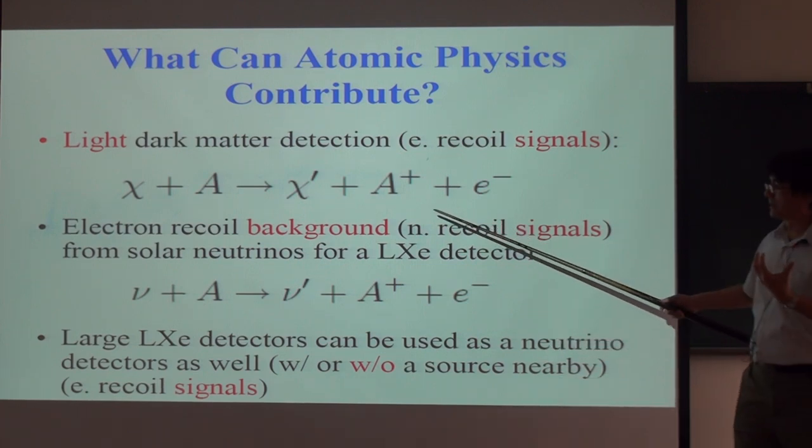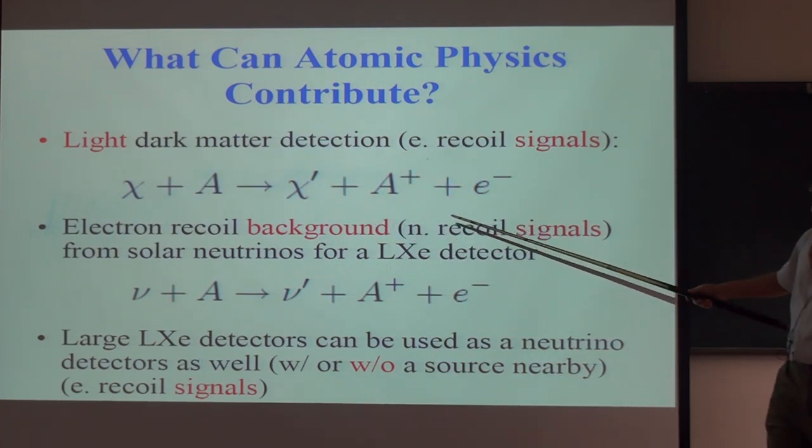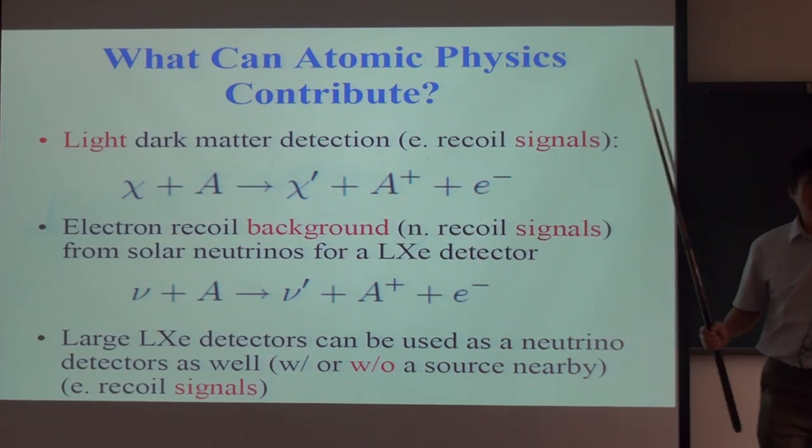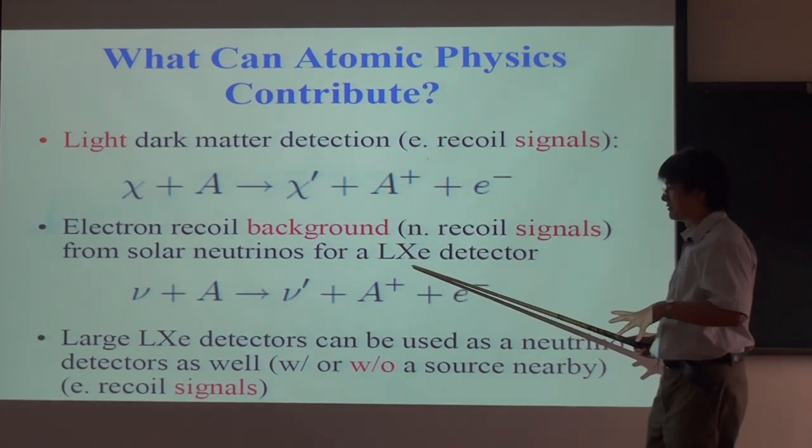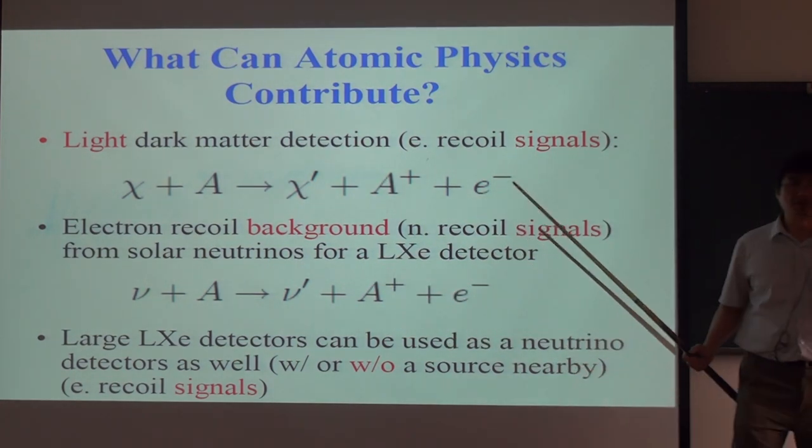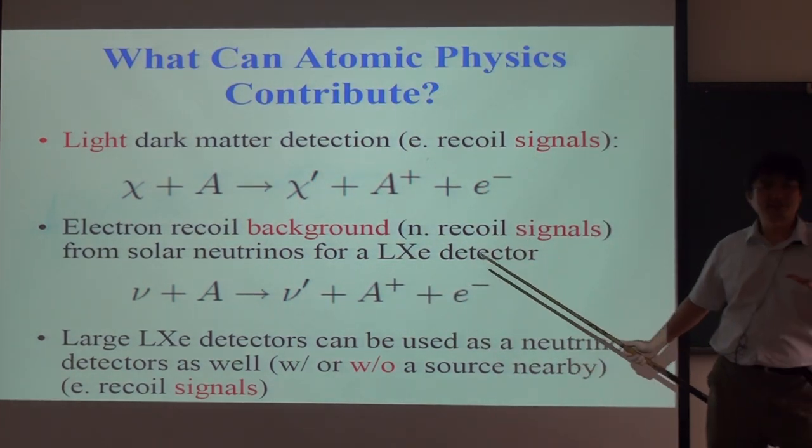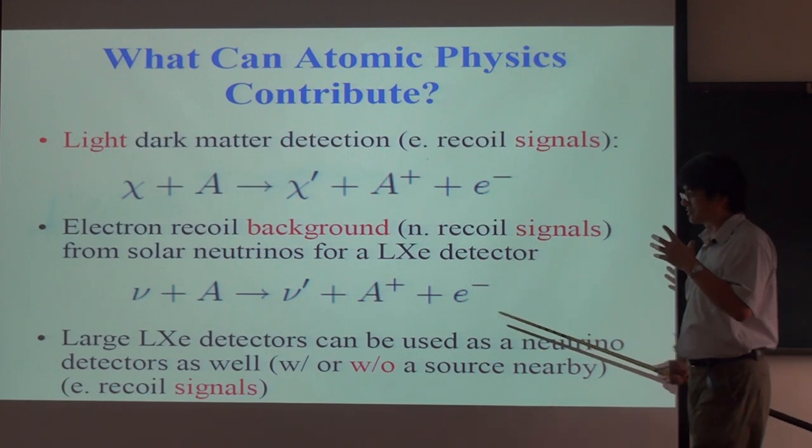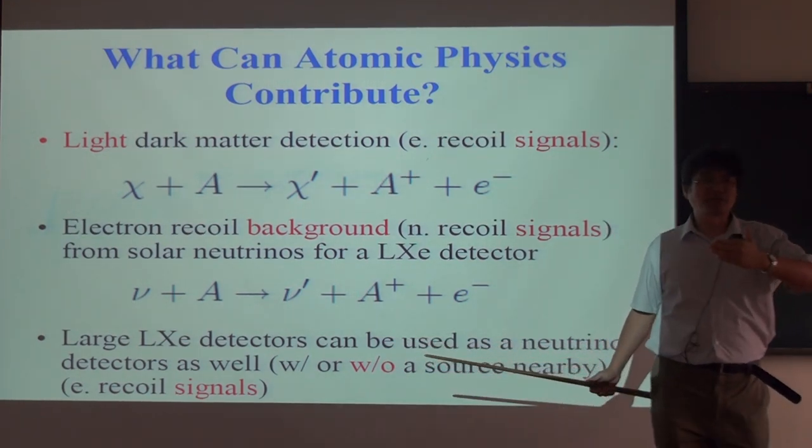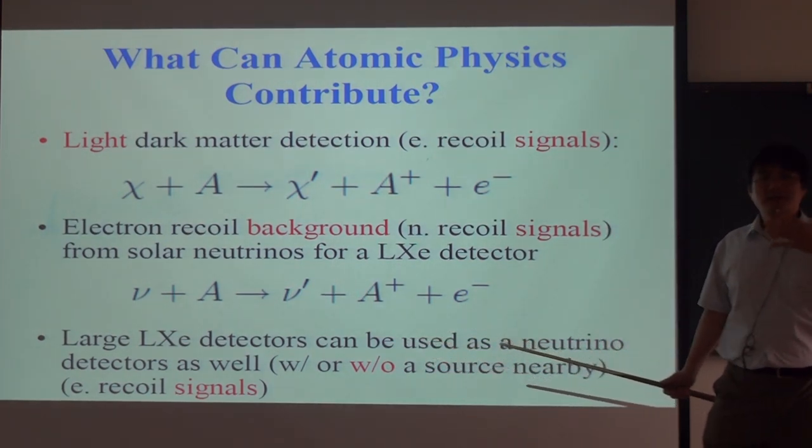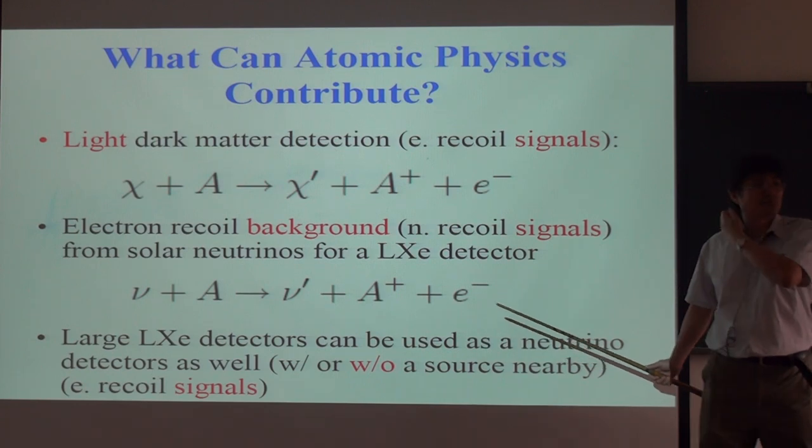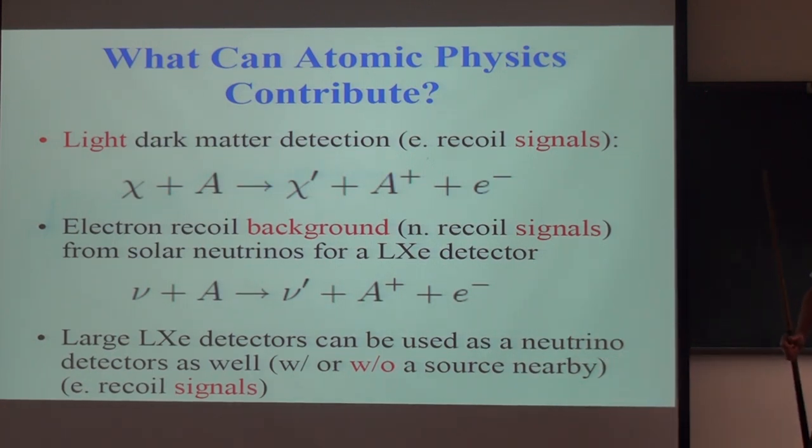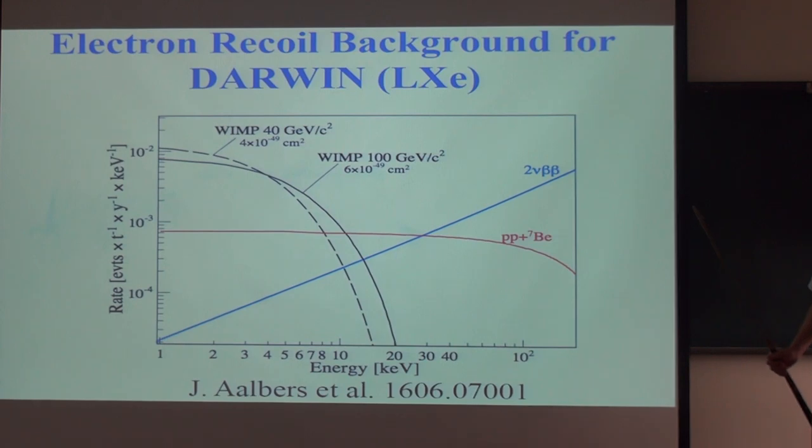And so if one is detecting an electron recoil, then this is an irreducible background. Because you see an electron comes out. But even if you detect a nuclear recoil, then the electron recoil could actually be a background. Because there is a possibility that electron recoil could be misidentified as a nuclear recoil. The probability is like 0.5%. It turns out this is significant enough. Because we actually have a lot of neutrinos from the sun that gives you a lot of these kind of events. And that is going to contribute to a significant background. And so this is one of the backgrounds.